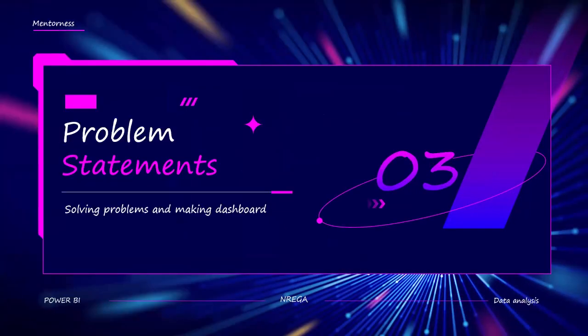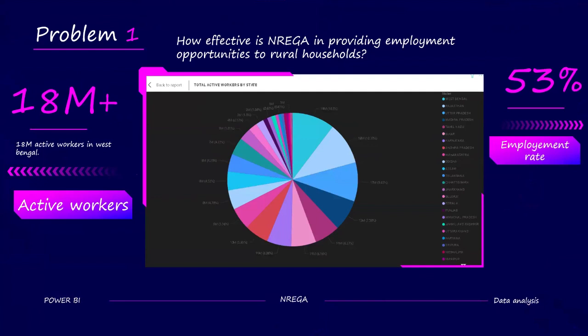Our third task is to solve some problems and make a dashboard. Problem one was to see how effective NREGA is in providing employment opportunities to rural households. You can see that there are 18 million plus active workers in West Bengal and a 53% employment rate.